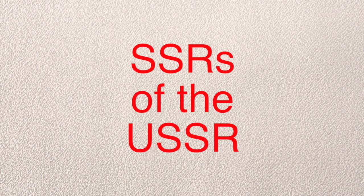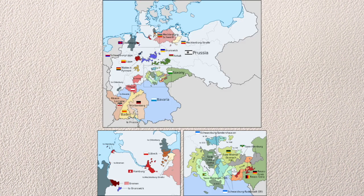And that is all the SSRs of the USSR — complicated countries within a complicated country, just like Prussia with all their kingdoms. But that's a story for another video.